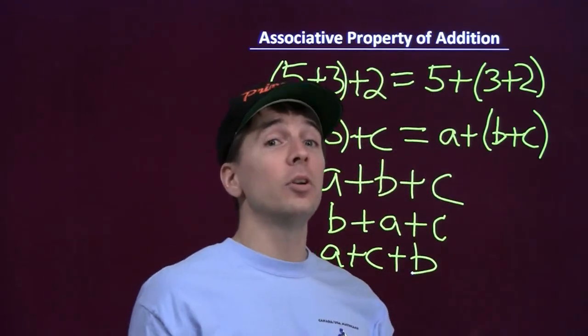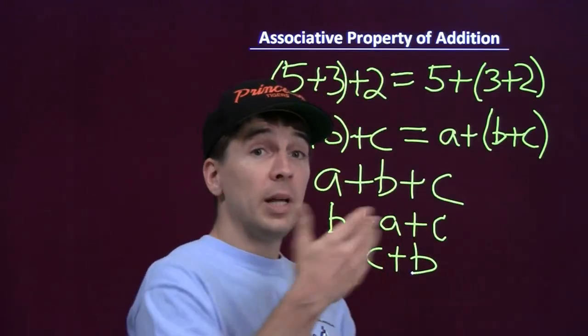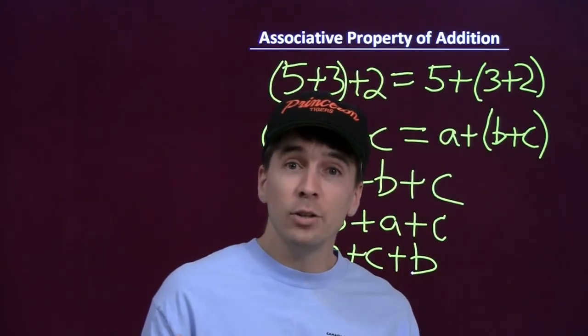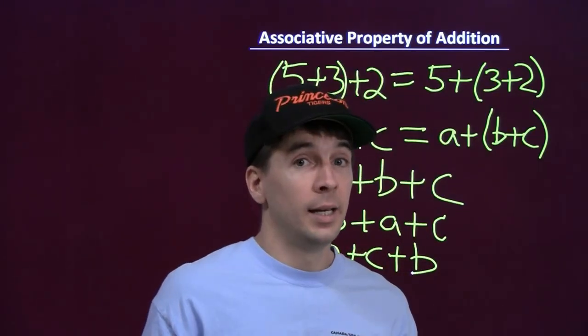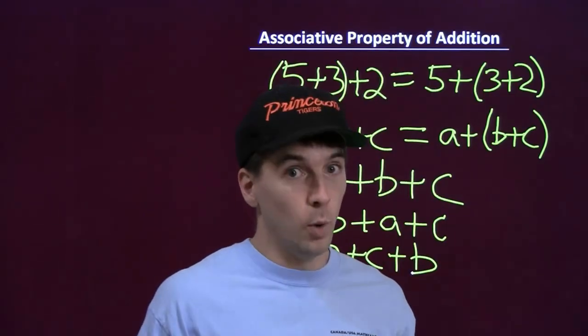And we can extend this to any number of numbers. We can start off with four numbers or five numbers. And we'll use the associative property and the commutative property to tell us that we can add those numbers in whatever order we want. And if you're anything like me, you like doing things any way you want to.